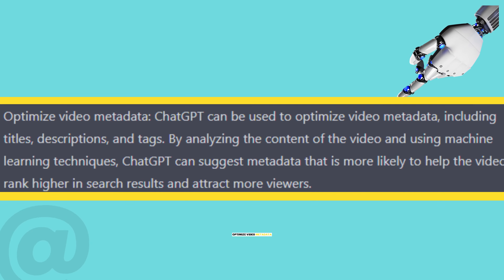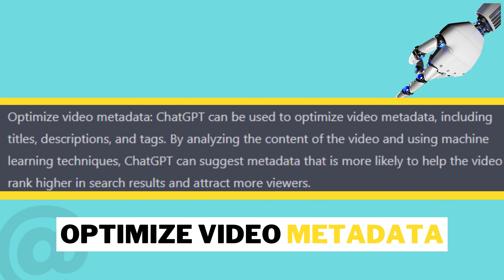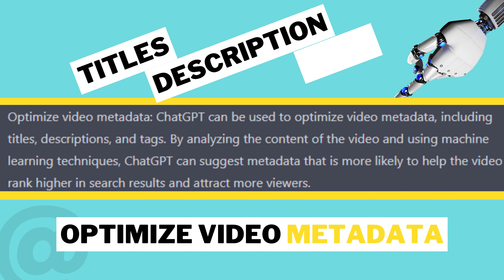Now let's go to one of the most important parts of video creation, especially for YouTube or other social media platforms. ChatGPT can be used to optimize video metadata including titles, descriptions, and tags. By analyzing the content of the video and using machine learning techniques, ChatGPT can suggest metadata that is more likely to help the video rank higher in search results and attract more viewers.